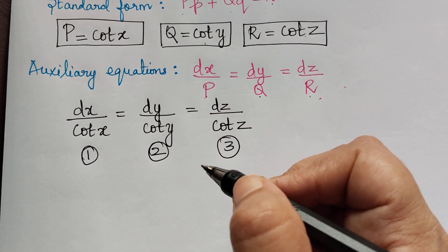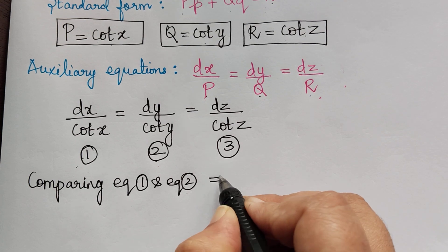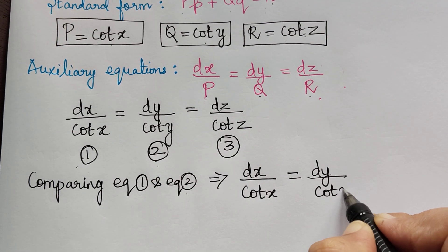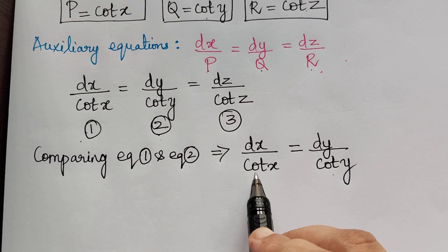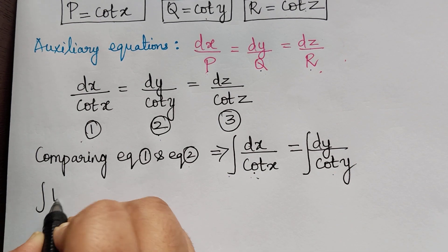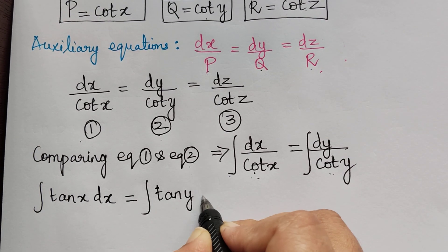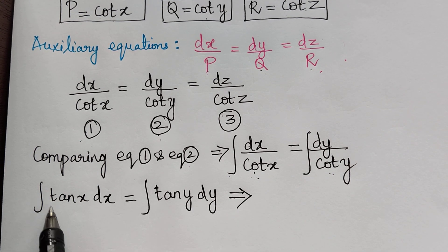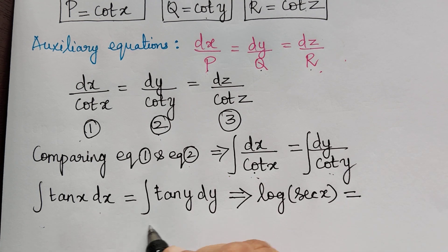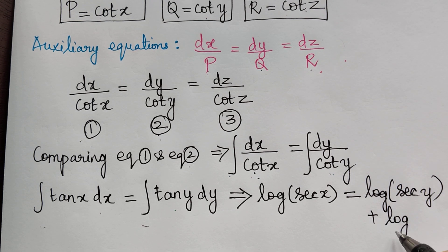Now we compare each of the equations to find the solution. First, we compare equations 1 and 2, which gives dx/cot x = dy/cot y. We integrate on both sides. Since 1/cot x = tan x, we have the integral of tan x dx equal to the integral of tan y dy. The integral of tan x is log(sec x).